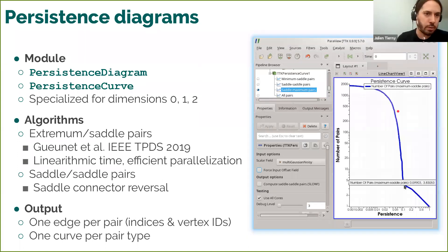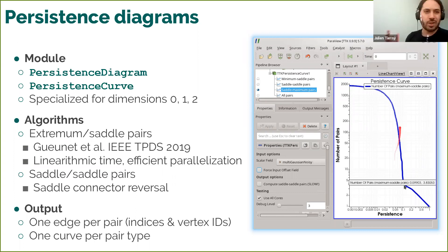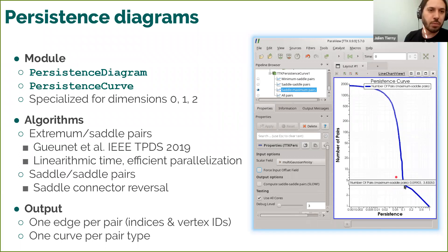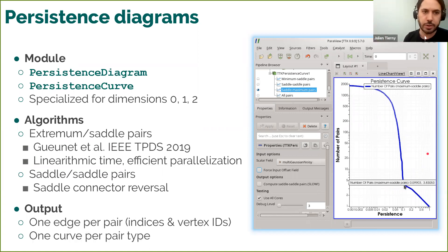We also provide the persistence curve representation — a curve plotting the number of pairs more persistent than a continuously increasing threshold. In practice this is useful to select a good persistence threshold for filtering your data. Usually there are discontinuities in those curves that exhibit a transition from noise to features, and you want to look at features more persistent than this threshold. You play a little bit with this curve to adjust the simplification.